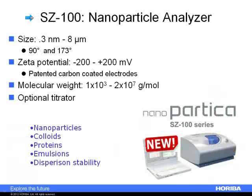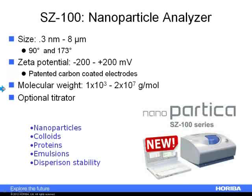The measurements you'll see today for particle size and zeta potential were run on the SZ100. I'm going to get the instrument background discussion out of the way before we move on to applications. Everything was measured using dynamic light scattering with the SZ100, built for particle size measured at 90 degrees or backscatter at 173 degrees. We'll also be using it to measure zeta potential, though not molecular weight today.